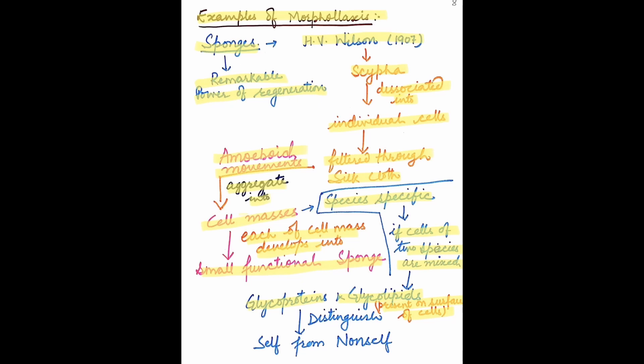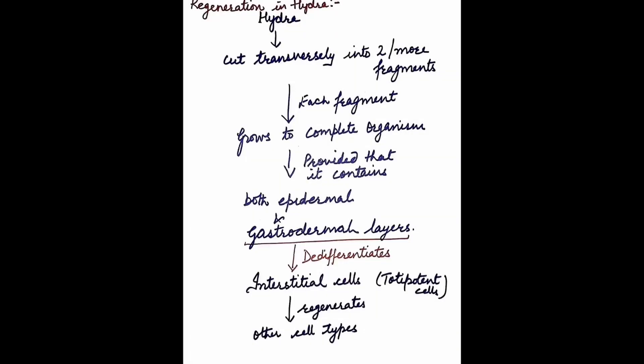These glycoproteins and glycolipids help in distinguishing self from non-self, meaning the cells can identify cells of their own species from other species. This is how, from a single cell, the entire body of the sponge can be recreated.